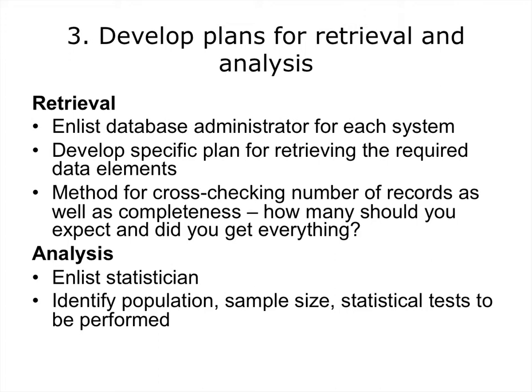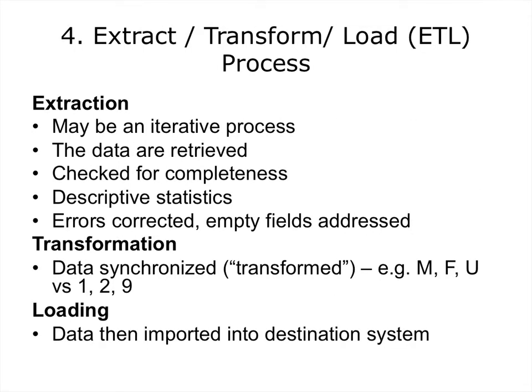An analysis plan needs to be developed. A statistician should be consulted, and questions to be addressed include: what is the population, what size does the sample need to be, and what statistical tests should be performed? The next step is the actual extraction of the data from the system or systems involved. After the data are retrieved, the data needs to be checked for completeness — were all the records that should be retrieved actually retrieved? At a minimum, descriptive statistics such as counts must be performed at this step. At this point, changes to the extraction plan may be needed, and another extraction from the source systems may need to take place.